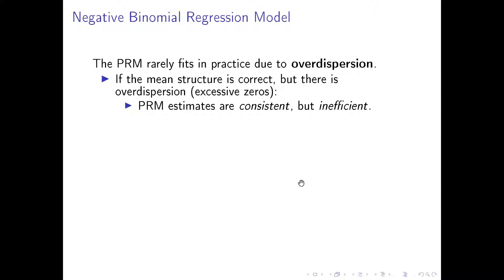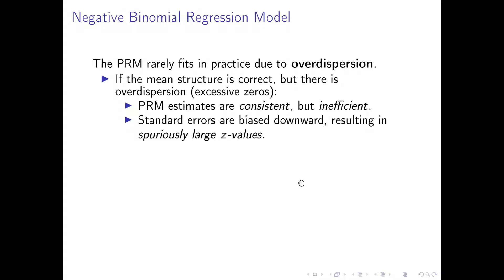Under that circumstance, PRM — or Poisson regression model — estimates are consistent. They're accurate, ballpark, but inefficient. That is, their standard errors are biased downward, resulting in spuriously large Z values. That is, they're more likely to reject the null that the coefficients are equal to zero, and the coefficients are more likely to be statistically significant than they are in reality.